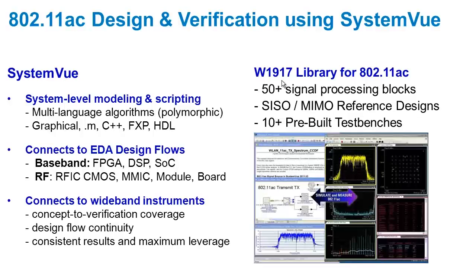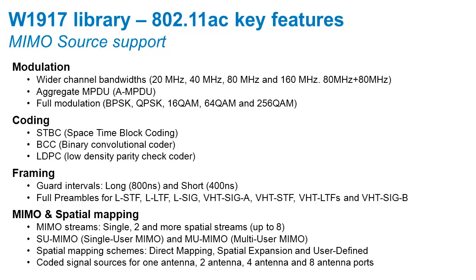In this demonstration, we're going to look at the W1917 Wireless LAN Library. This library provides signal processing blocks and about a dozen pre-built test benches to help you design and verify wireless LAN systems. The new W1917 Library provides support for all the modulation and coding schemes, including all the new wider bandwidths and modulation formats, coding, framing, as well as MIMO and spatial mapping.